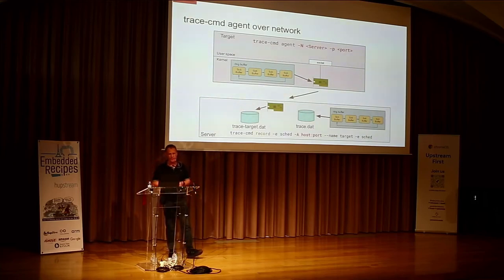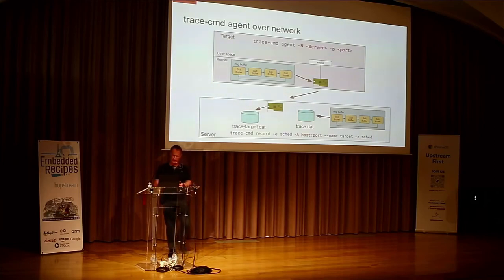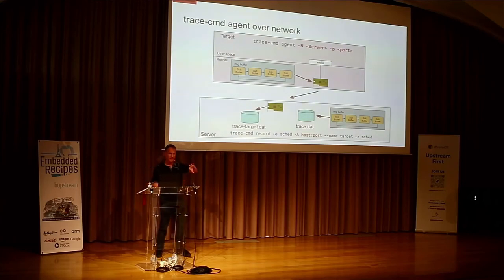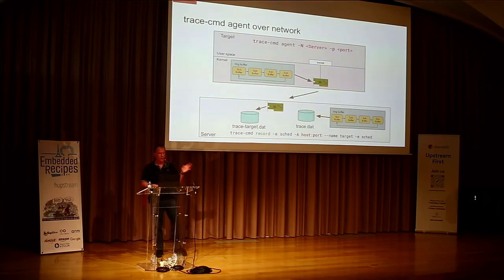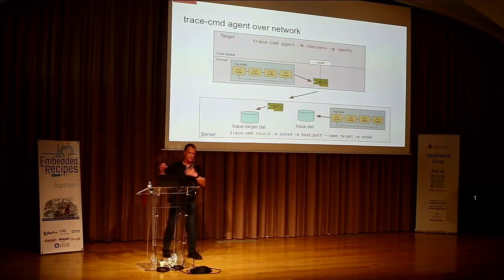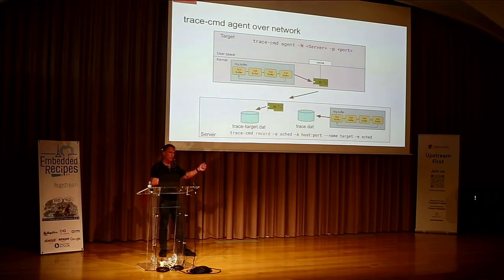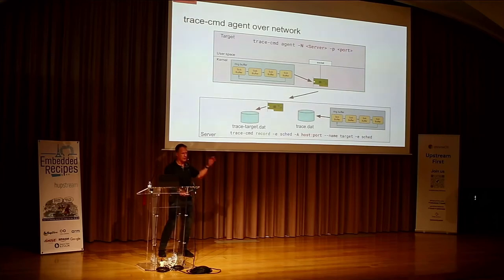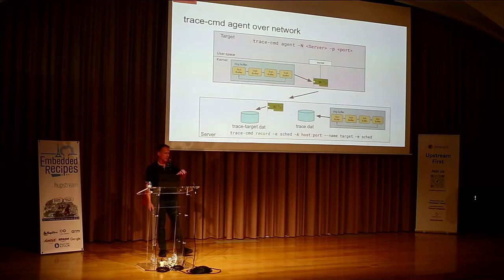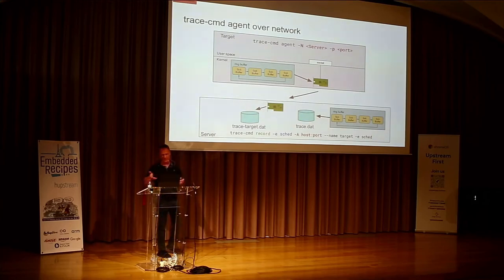If you have libvirt running, you can put the name of the guest and it will talk to libvirt, find the guest, and try to connect. If not, you put a host name and it will connect to the target. You pass in the name — this time I said target instead of guest. You can give it anything. The agent also connects to a network, so your embedded board can run tracecmd agent over the network for remote control.